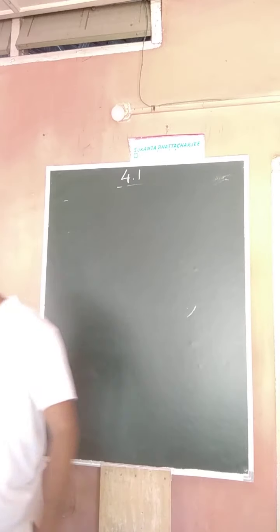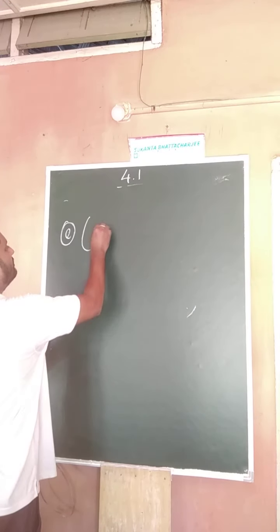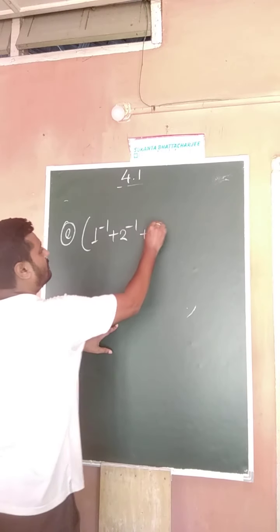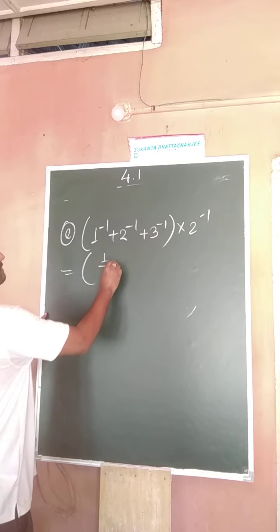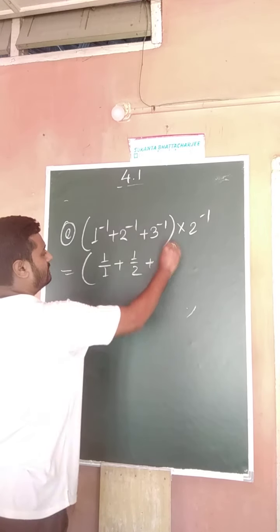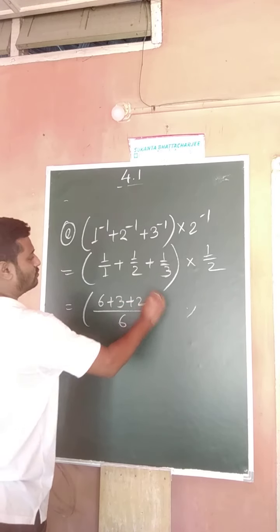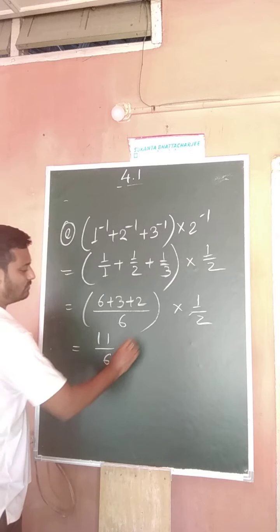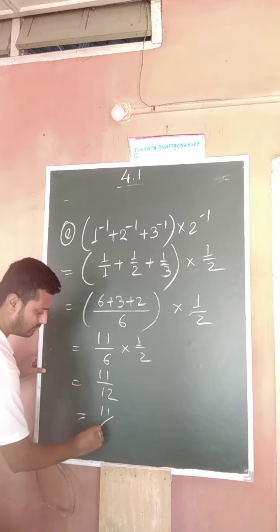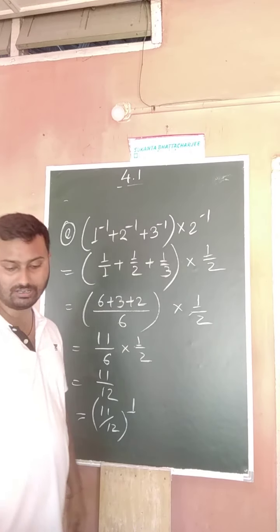Now come to question number E. So E is: 1 to the power minus 1 plus 1 to the power minus 1 plus 1 plus 1 by 2 plus 1 by 3. If you take the LCM it becomes 6, so 6 plus 3 plus 2 gives 11. So it is 11 by 6 into 1 by 2, which is 11 by 12. So in positive exponent form it is 11 by 12 to the power 1. Question number 3 has been finished.